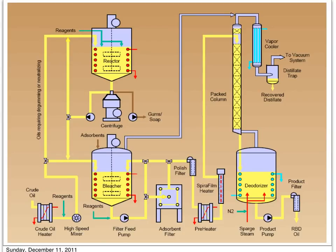This diagram shows the various stages in the refining of crude palm oil. Starting from the crude oil, it will pass to a heater or heat exchanger. The oil will be heated to increase the temperature and reduce the viscosity so that it can flow easily through the processing line.